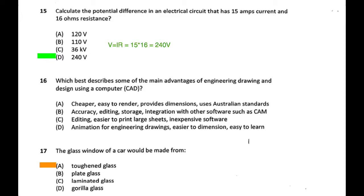Question 16 on CAD: it's not necessarily faster or cheaper, but CAD makes it easier to store information, send information, and modify designs. The correct answer is B - CAD is accurate, editable, and able to store integrated data. CAM (computer-aided manufacture) allows you to connect CAD output to 3D printers, laser cutters, and other machines.